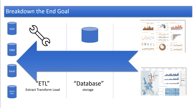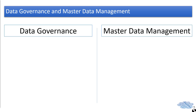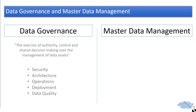This brings us to probably the two key features of any good data strategy: data governance and master data management. Data governance is the exercise of authority, control, and shared decision-making over the management of data assets. This covers things like security, architecture, operations, deployment, and data quality — key for having a strong data strategy. It's something you need to embed into your company and organisation early, otherwise things start to get very messy.